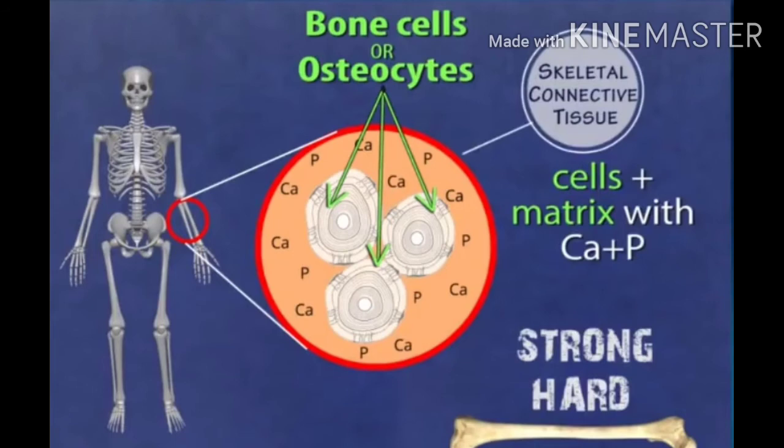Skeletal connective tissue forms the framework of our body, supports our muscles, and supports the main organs. It is strong and non-flexible. Bone cells are embedded in a hard matrix composed of calcium and phosphorus compounds.